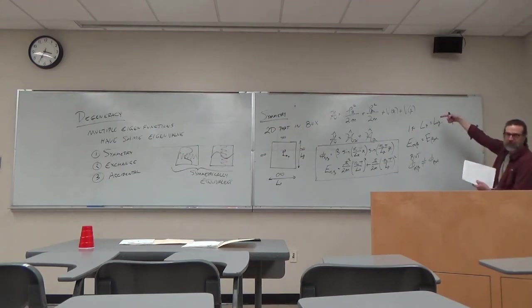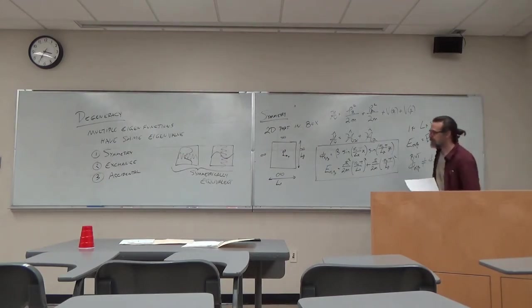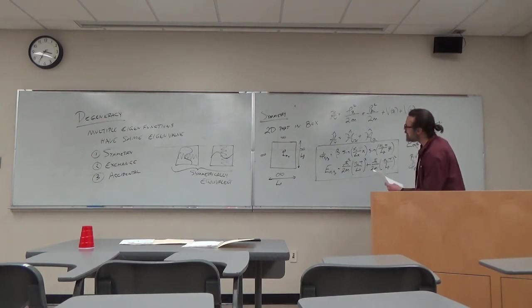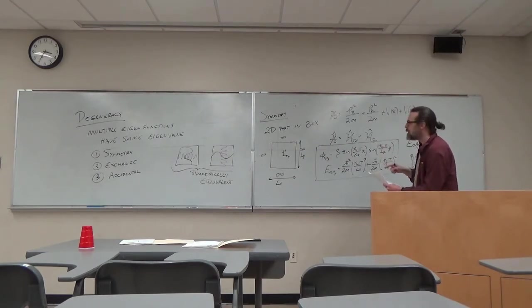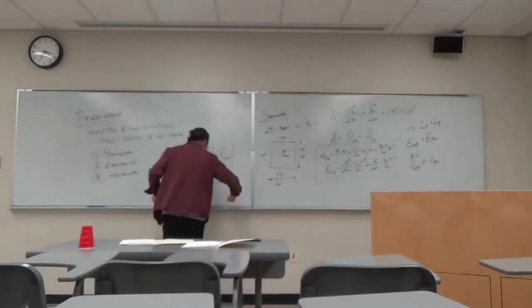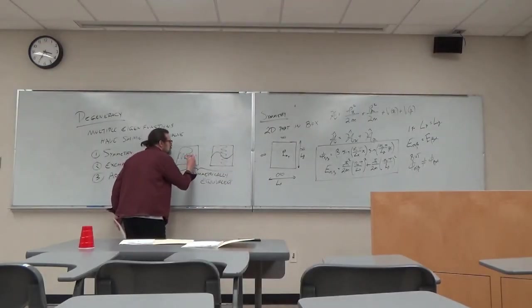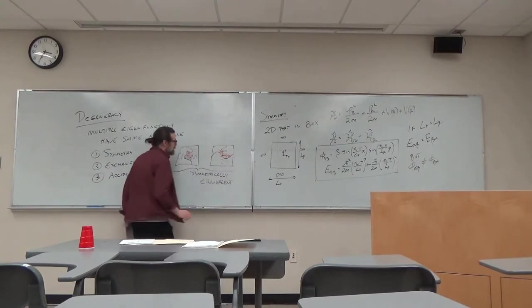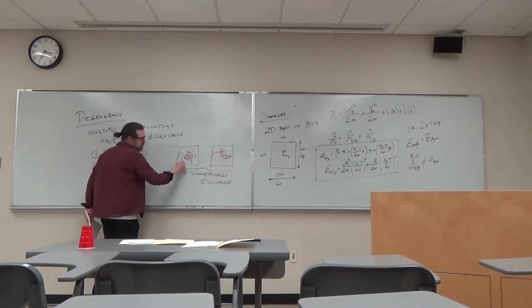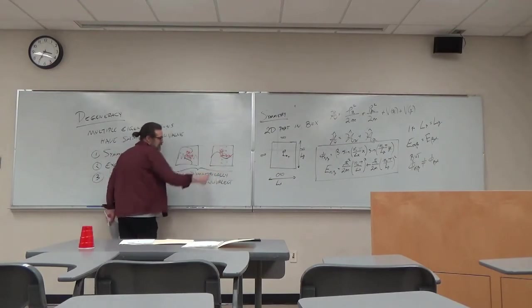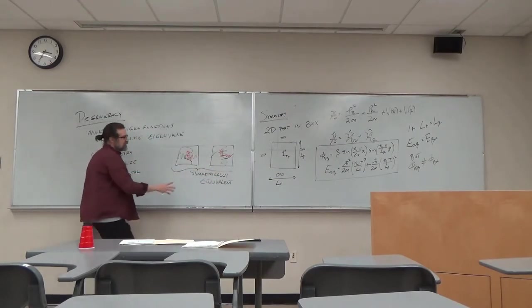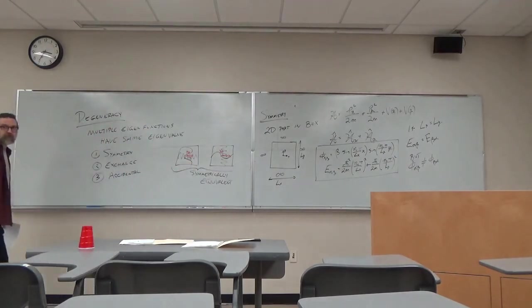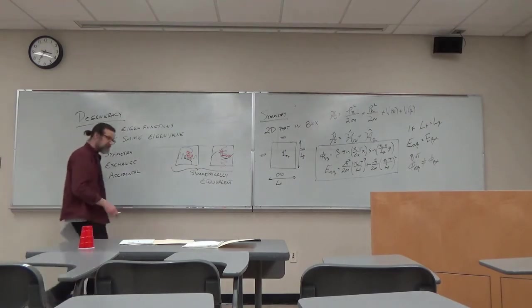Same energy, different functions. If you think about this — in one case you've got a bunch of nodes in the x direction, and in the other case you've got a bunch of nodes in the y direction. These two have the same energies, but spatially the solution is distributed differently. The function is different but the energy is the same. The eigenvalue is the same but the eigenfunction is different.